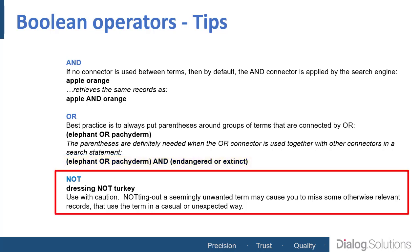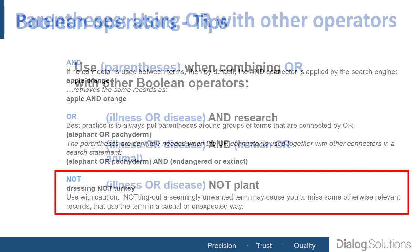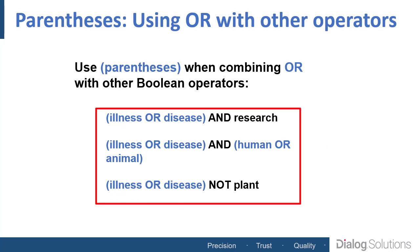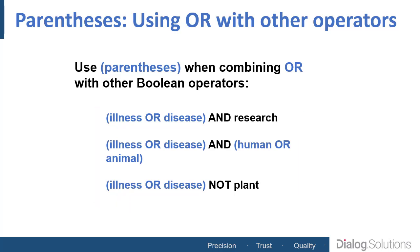As to the NOT operator, I might suggest you use this with some caution, only because it might block out some records that you do want, but there are situations where the NOT connector is exactly what you need. Here you see some examples of the correct way to use parentheses in a search where you're using both OR and other connectors such as AND. If you always put parentheses around any group of terms you're combining with OR, you'll have no problems adding other connectors to your search.